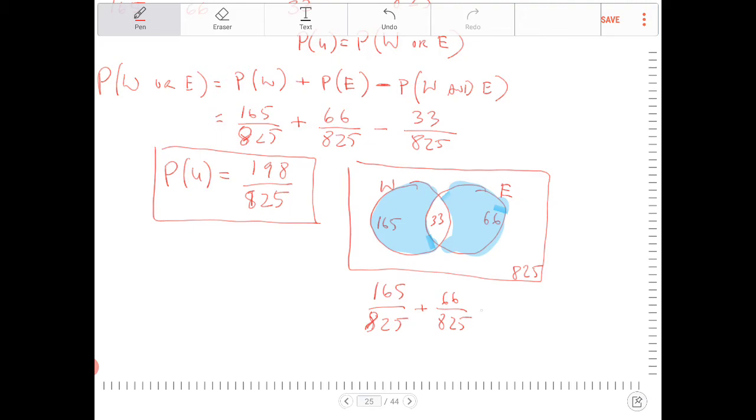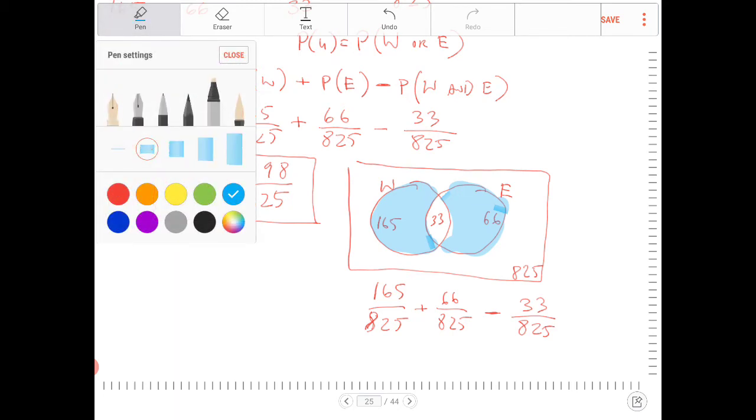But because we have that overlap there, we have to subtract by 33 over 825, right? Because the 165 and the 66, they take up all of those two things together. So that's why we have to subtract out that area, which I'm going to highlight in red.